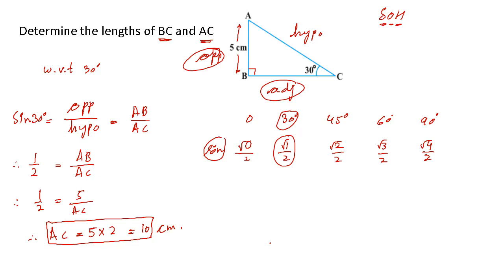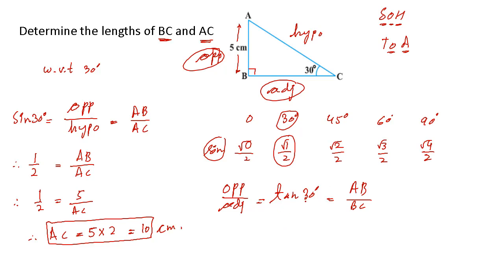The opposite side is given and the adjacent side is what we want to find. The ratio connecting opposite and adjacent is: opposite divided by adjacent — from SOH-CAH-TOA, that is tangent. So let me write tan of 30 degrees equals AB (opposite) divided by BC (adjacent). For the value of tan 30, looking at the tan column in the table for 0°, 30°, 45°, 60°, and 90°.